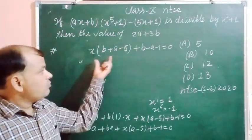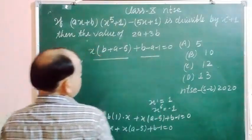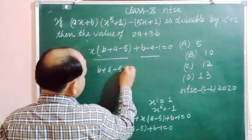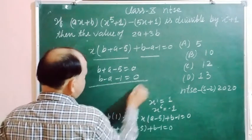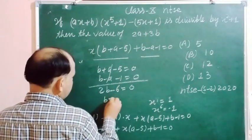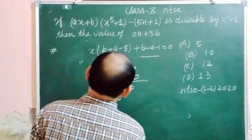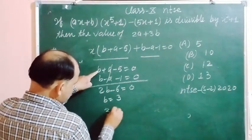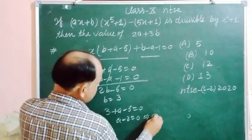This equation equals zero. So comparing the variable part and constant part separately to zero: B + A minus 5 = 0, and B minus A minus 1 = 0. Adding both equations: 2B minus 6 = 0, so B = 3. Substituting back: 3 + A minus 5 = 0, giving A minus 2 = 0, so A = 2.